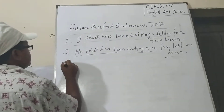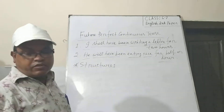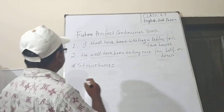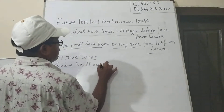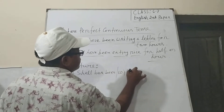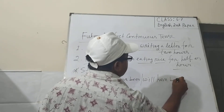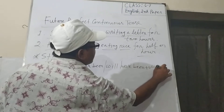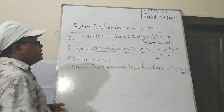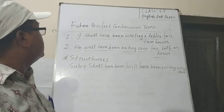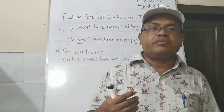Now the structure of future perfect continuous tense: subject, then 'shall have been' or 'will have been', then verb with '-ing', then object or time extension. In case of negative, you add 'not'. In case of interrogative, place the auxiliary verb 'shall' or 'will' at the beginning.